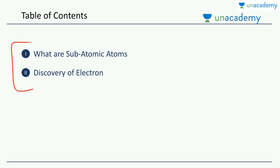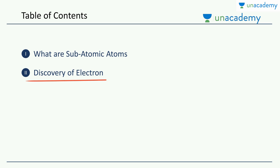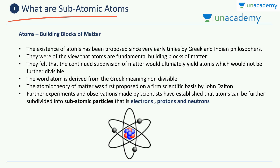We will be taking up two topics of discussion in this video. The first one: we will answer the question, what are subatomic particles? Subatomic particles are something which is present inside an atom, and we will divide an atom into its three constituent parts. In the next section, we will take up the first constituent of an atom, which is the electron, and we will learn how the electron was discovered.